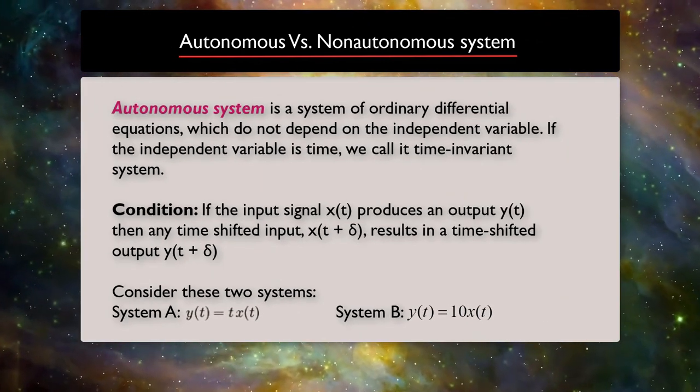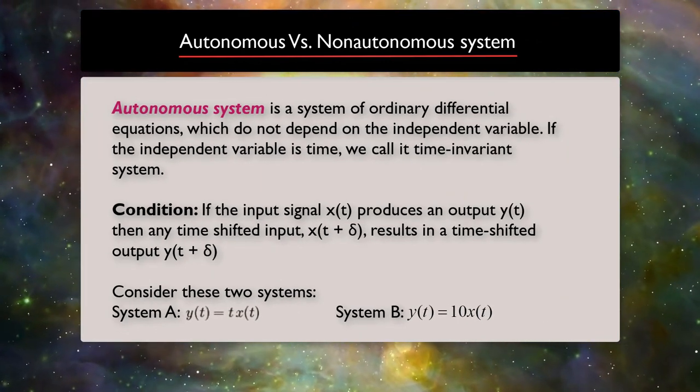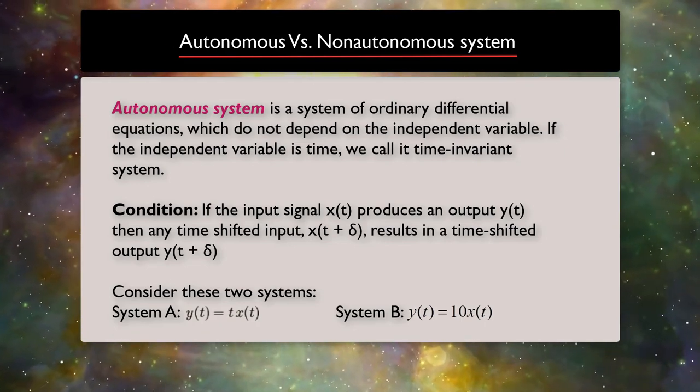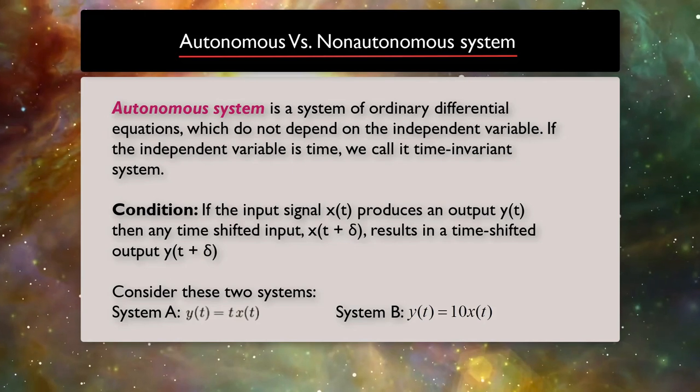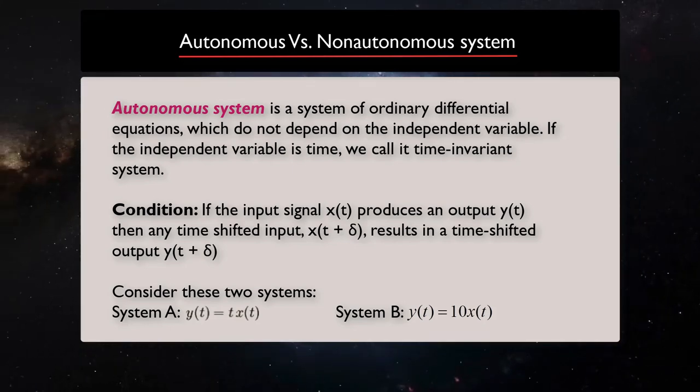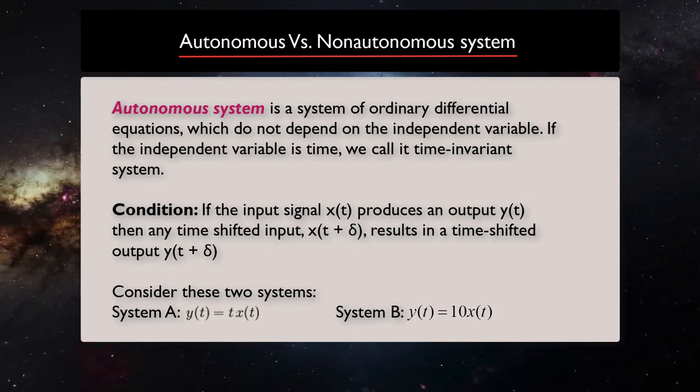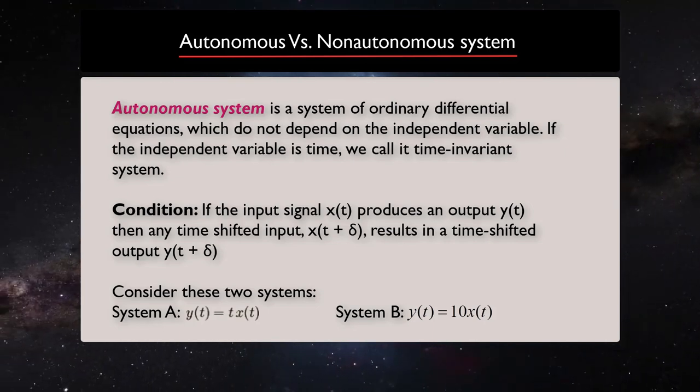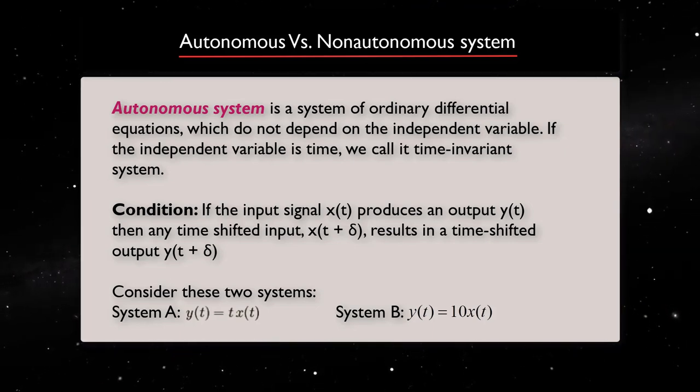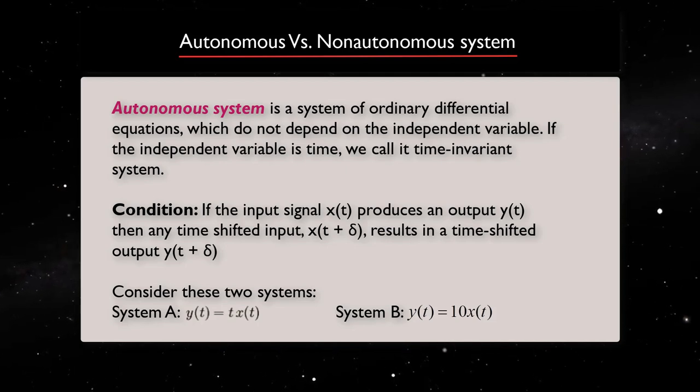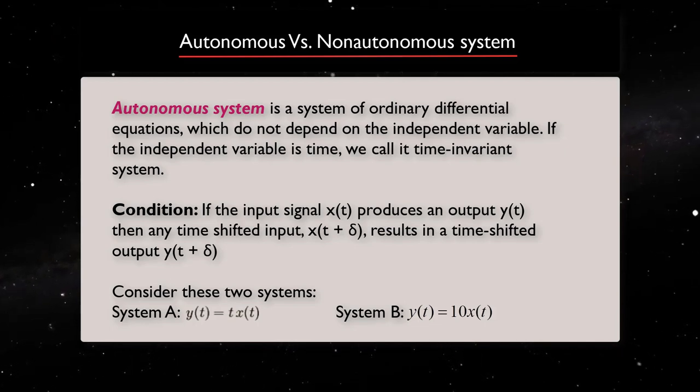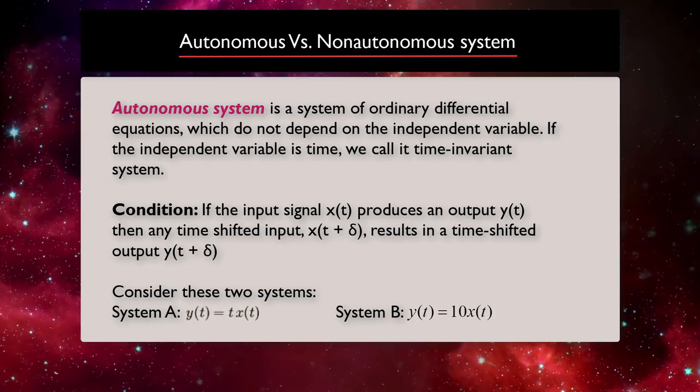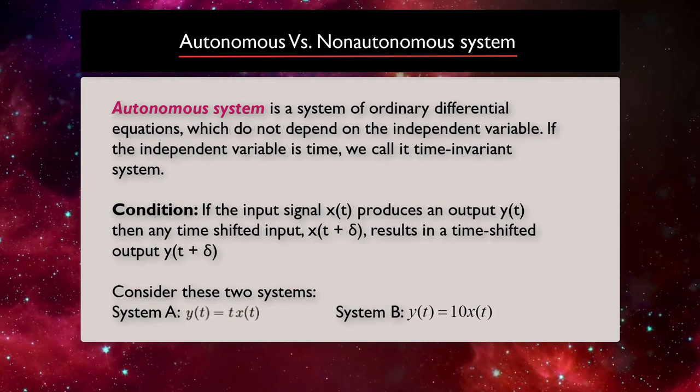The last classification of the dynamical system which we will talk about in this module is if a system of ordinary differential equations is autonomous or not. If we have a system of ordinary differential equations which does not depend on the independent variable, we call it an autonomous system. And if this independent variable is time, we call it time invariant system. In an autonomous system, if the input signal x(t) produces an output y(t), then any time-shifted input x(t + δ) results in a time-shifted output y(t + δ).